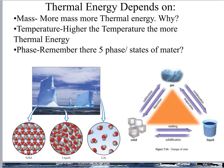Thermal energy depends on mass — the more mass you have, the more thermal energy, because the more particles you have, the more energy. Thermal energy also depends on temperature: the higher the temperature, the more thermal energy, because if your average is high, more particles will have more thermal energy by definition. Lastly, thermal energy dictates the five phases or states of matter and how they change from one to another — there must be thermal energy gained or lost. For example, going from a solid to a gas through sublimation requires thermal energy to go into those particles in order for the state change to occur.